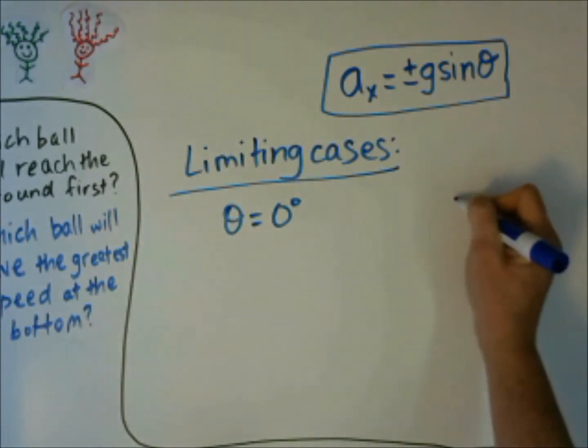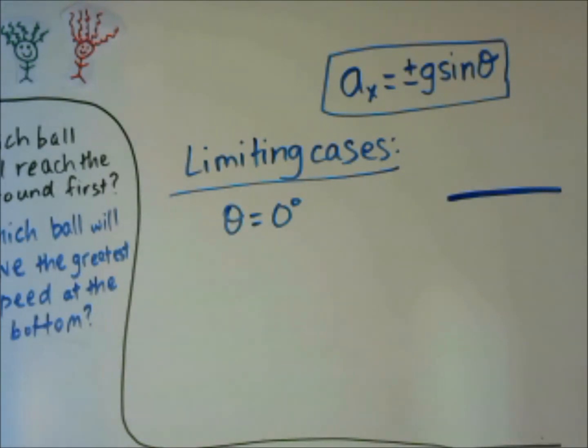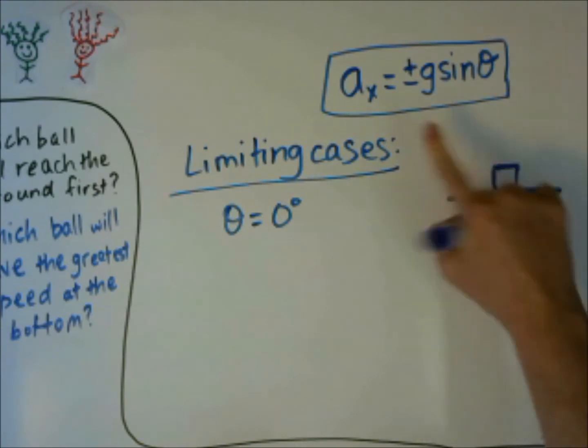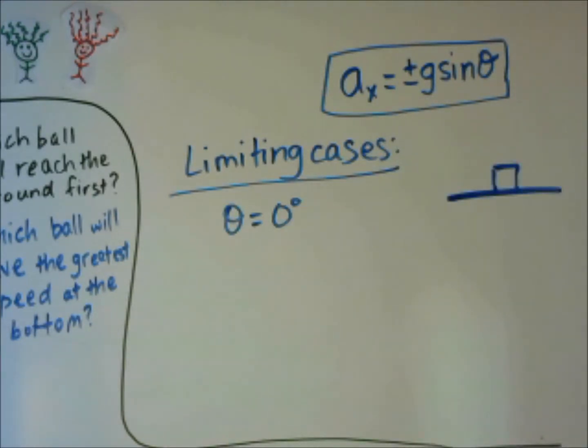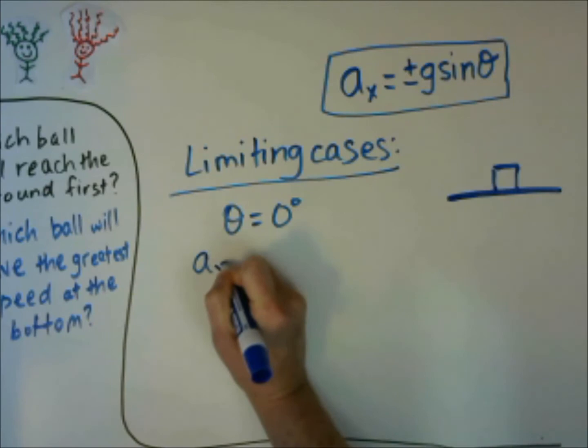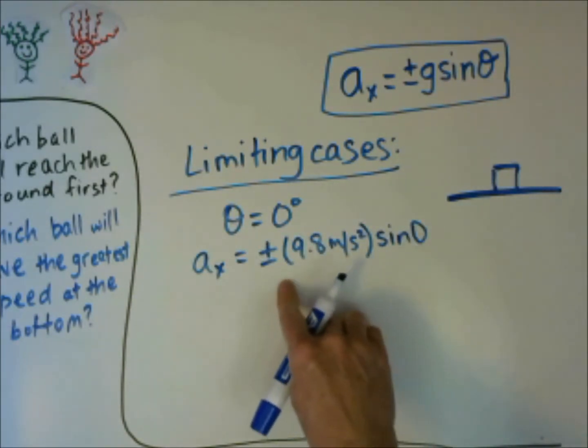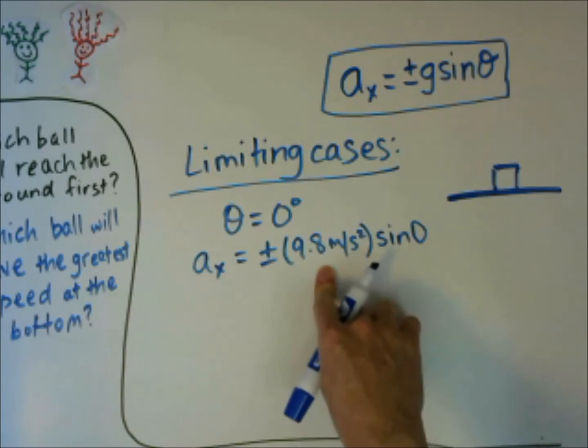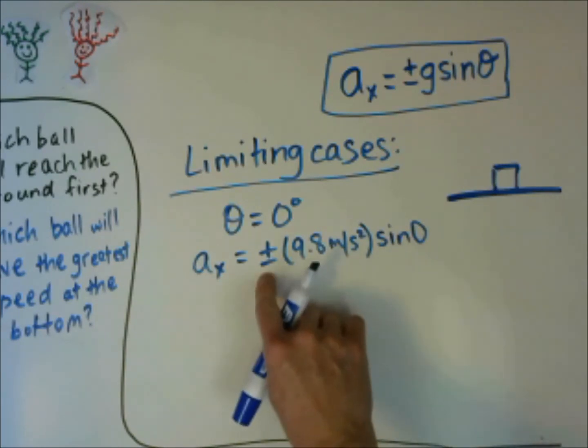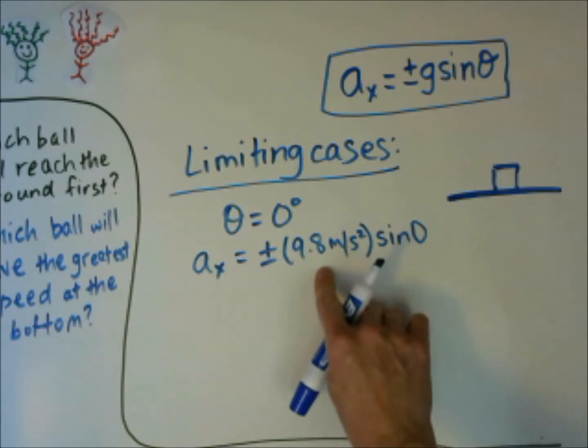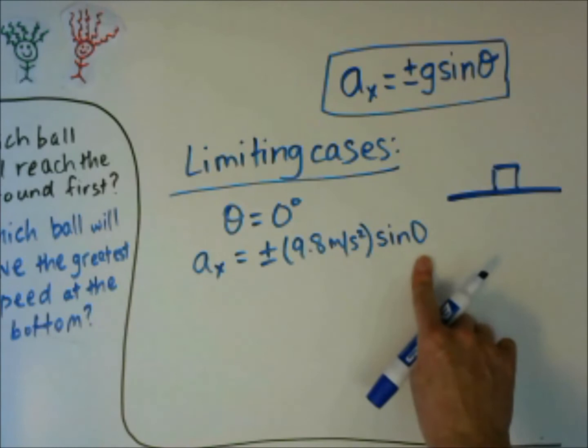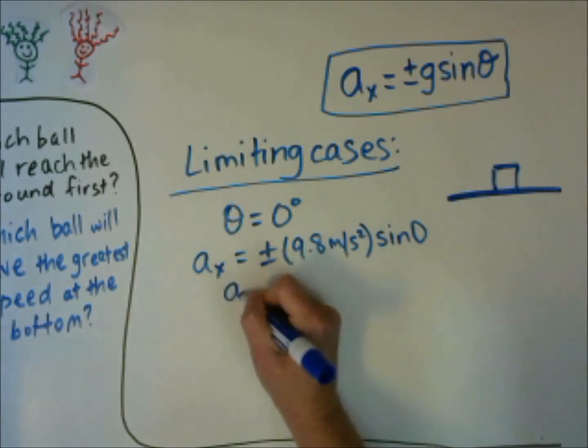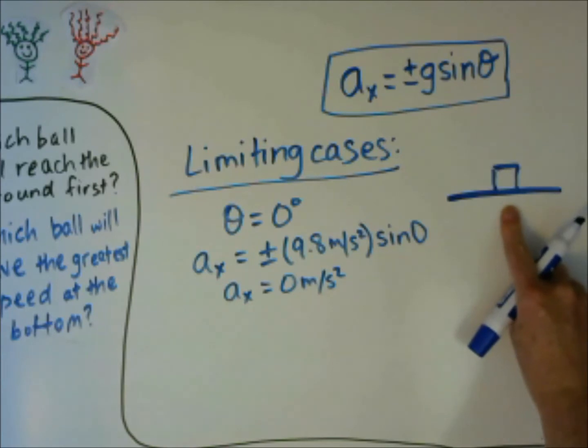Let's consider some limiting cases. What if theta were zero degrees? That means your incline plane has no angle, it's a flat surface. What happens to the acceleration in the x direction from gravity? In this case, when we plug our g into the equation, we're going to use a positive 9.8, not a negative. The negative comes in the plus and minus part of it. And what is the value of sine of zero? It's zero. So in a limiting case where theta is zero, our acceleration from gravity is zero, and that makes sense.